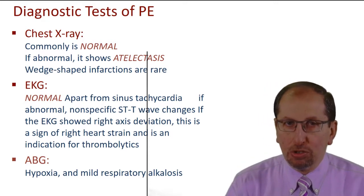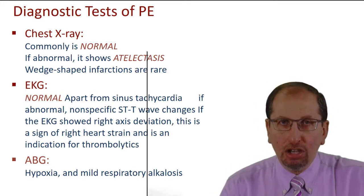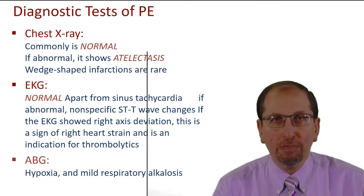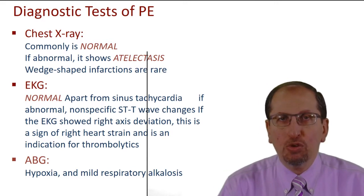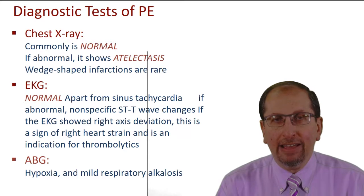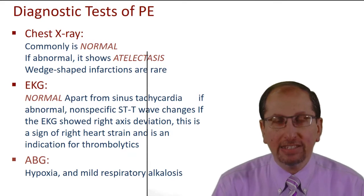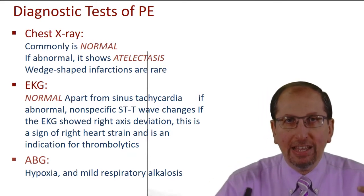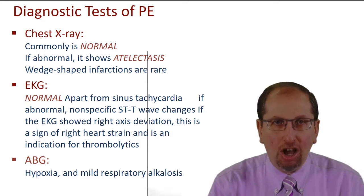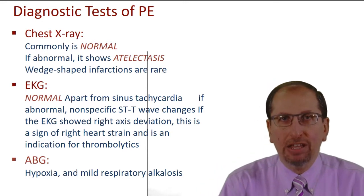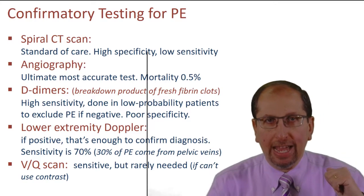Arterial blood gases will show hypoxia and mild respiratory alkalosis. Why alkalosis? Because when oxygen tension drops, the body compensates by more rapid breathing for more gas exchange. Carbon dioxide has better diffusion capacity than oxygen, so when you breathe rapidly, you exhale more CO₂ than you take in oxygen — CO₂ drops in the blood, resulting in mild respiratory alkalosis.